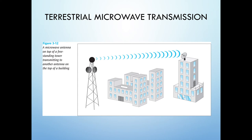Terrestrial microwave systems transmit tightly focused beams of radio signals from one ground-based microwave antenna to another. The two most common application areas of terrestrial microwave are telephone communications and business interconnection. For example, businesses can place antennas on top of tall buildings or high hills every 15 to 30 miles to connect corporate buildings. It also offers a high data rate of around gigabits.